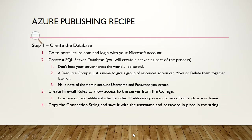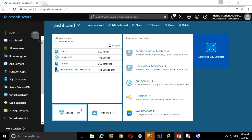The last thing we'll do once we create the firewall rule is the connection string. I'll show you where we can grab it. I usually save this in Notepad to have a copy because we're going to use it in our actual Visual Studio web application in the web.config file.